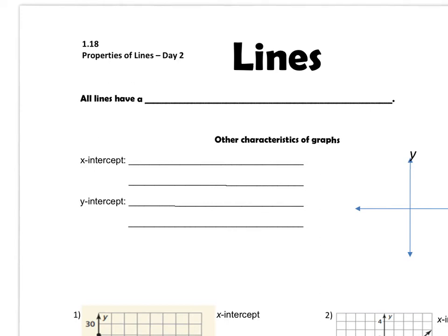We're beginning to talk about lines today and tomorrow specifically. We're going to talk about their components, the different parts of lines. First of all, you need to know all lines have a slope, and we will talk about slope tomorrow. Lines also have two other characteristics.